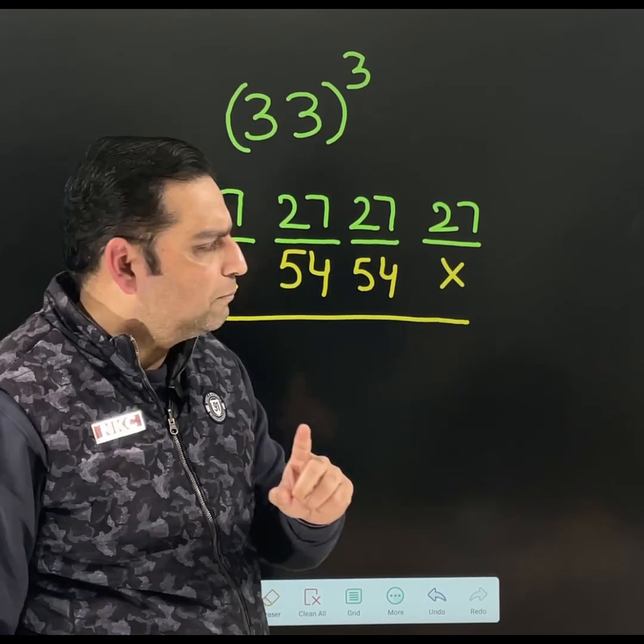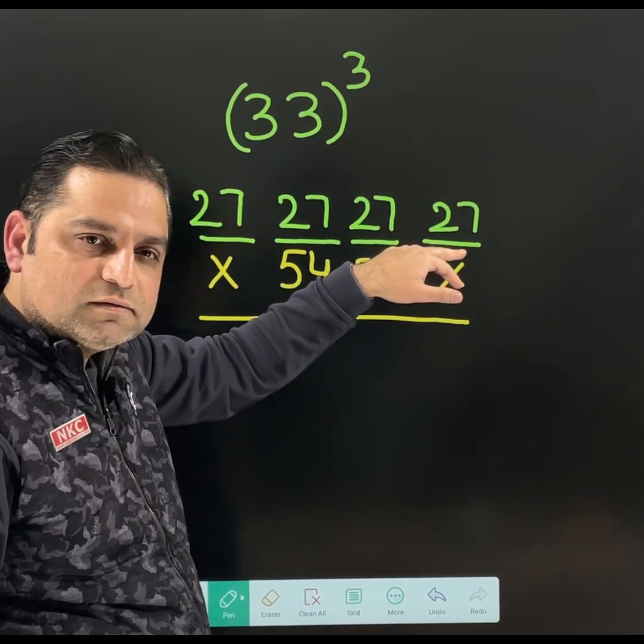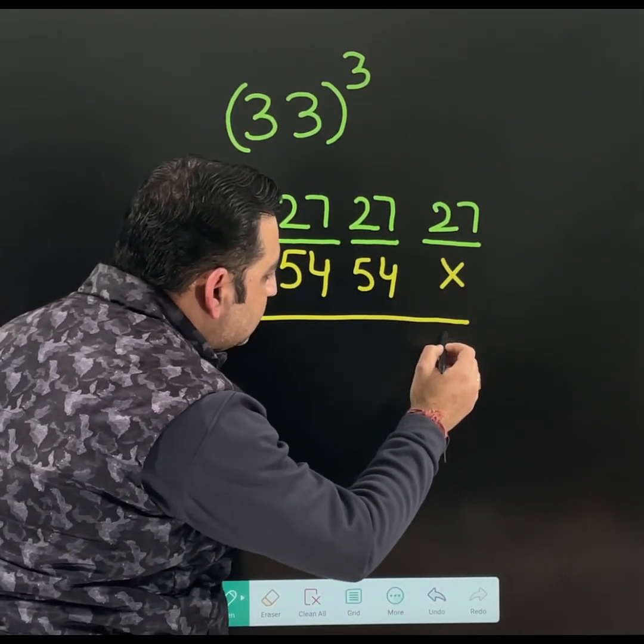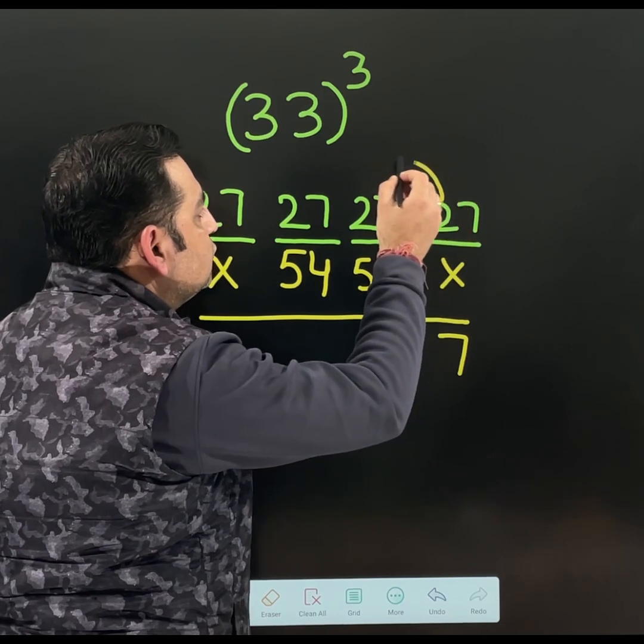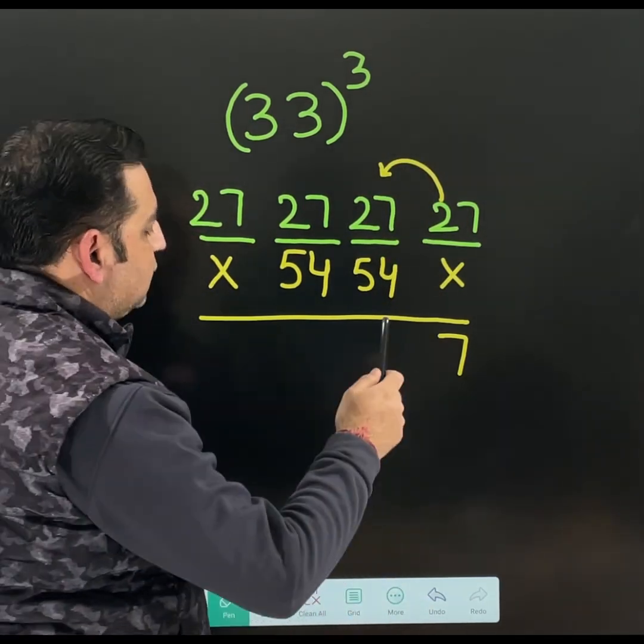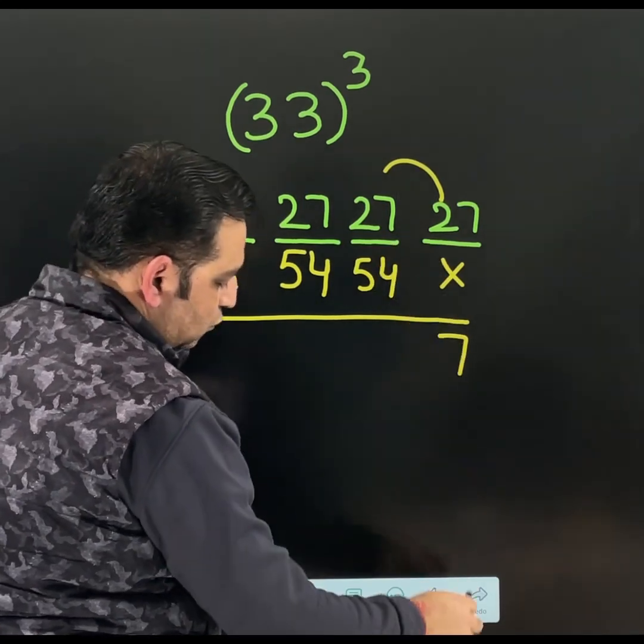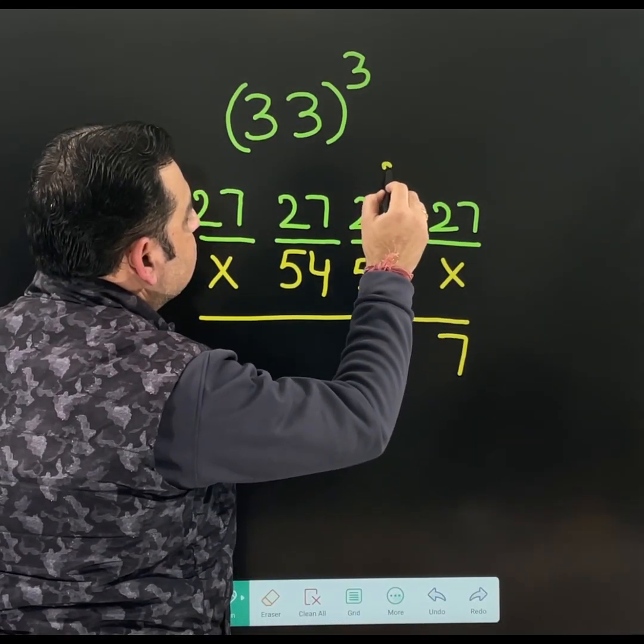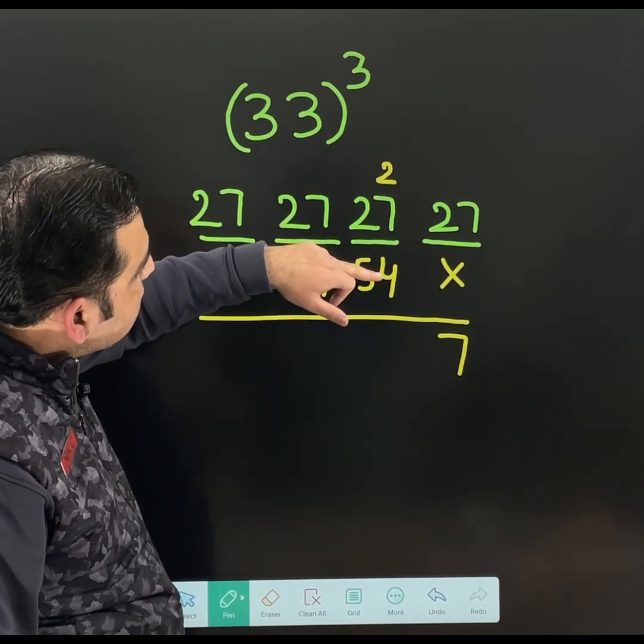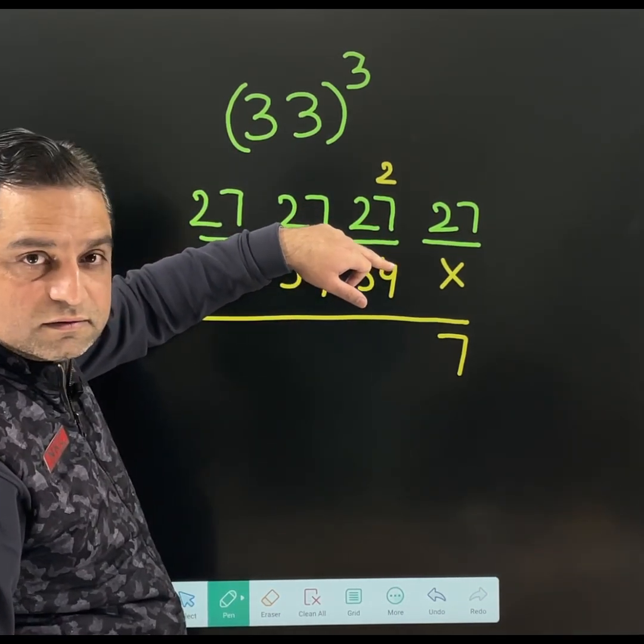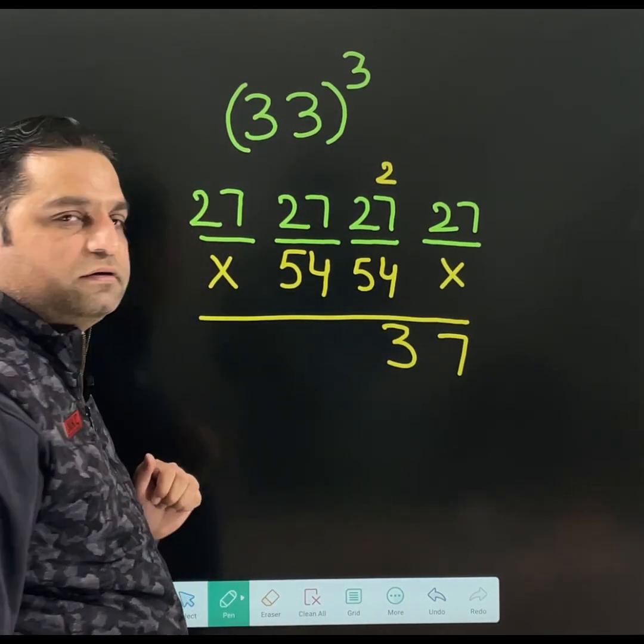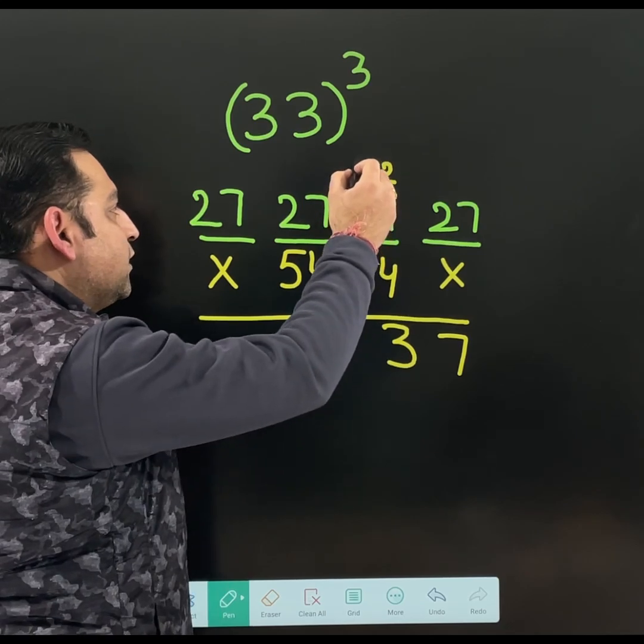And what we need to do now, we just need to add them. But do remember, this 27, I will not write blindly 27 here. No. I will write only 7. This 2, I am going to carry to the next value. That means 2, I am going to write here. Now add them. 7 plus 4, 11. 11 plus 2, 13. 3 is coming here. 1 is carried.